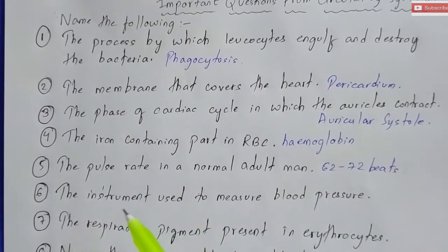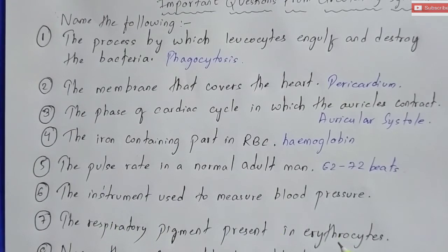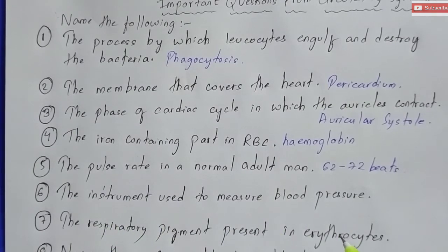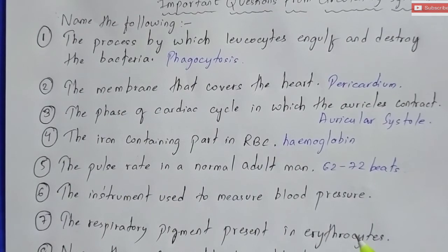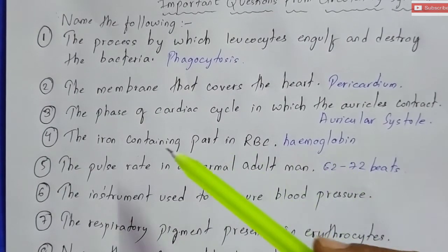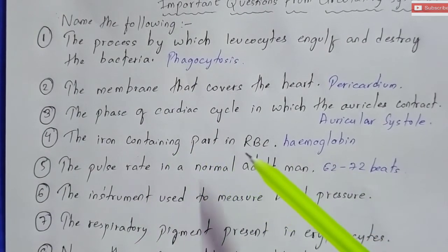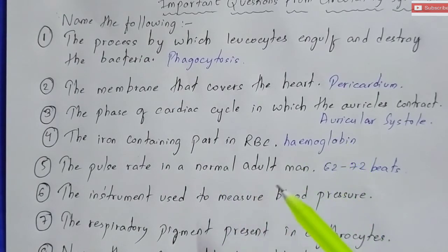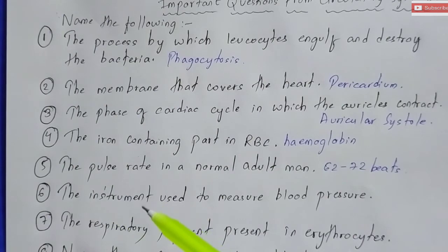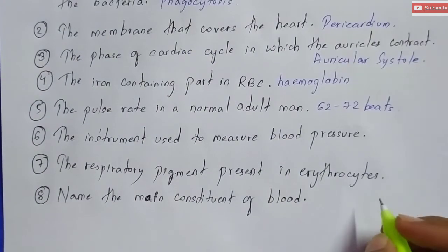Question number seven: the respiratory pigment present in red blood cells or erythrocytes. I have already said the answer to this — the iron-containing part in RBC is hemoglobin, and the answer for question number seven is also hemoglobin. The respiratory pigment present in erythrocytes is hemoglobin.